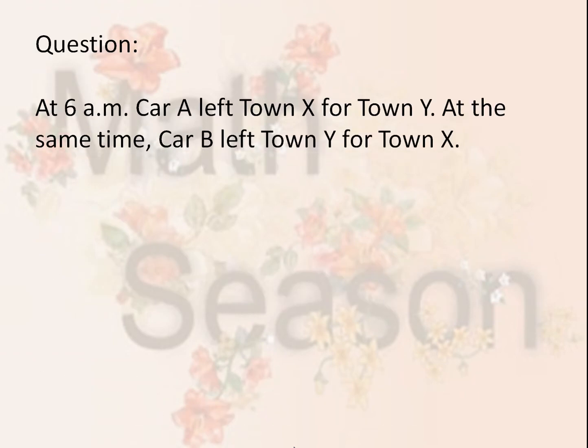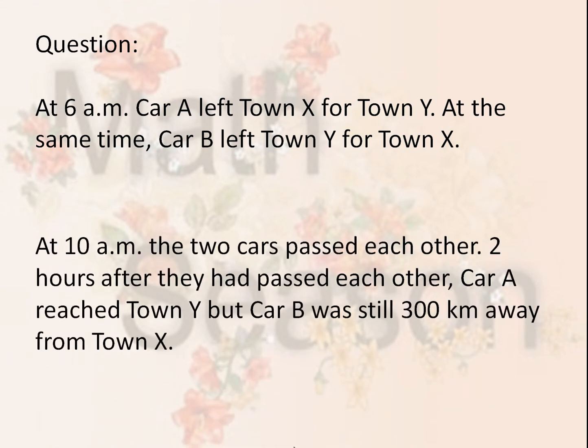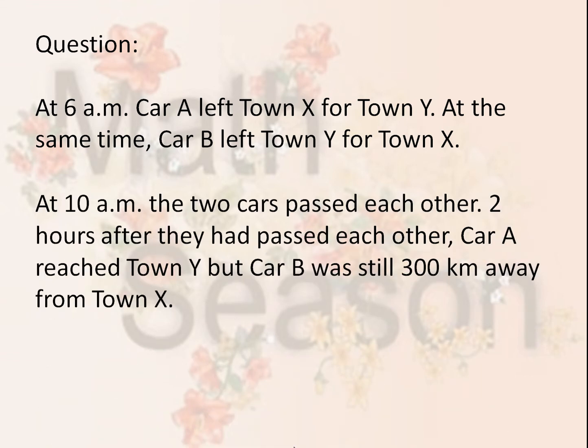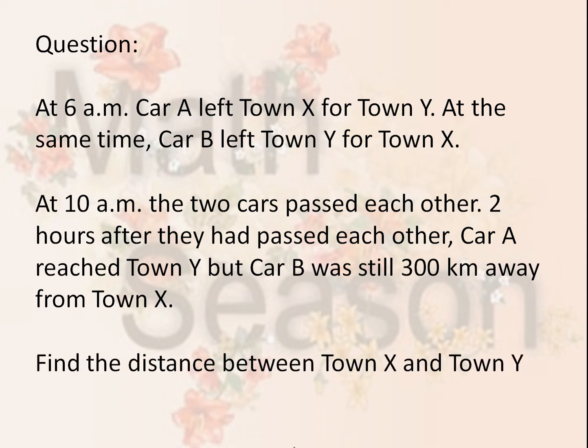At 6 a.m., car A left town X for town Y. At the same time, car B left town Y for town X. At 10 a.m., the two cars passed each other. Two hours after they had passed each other, car A reached town Y, but car B was still 300 kilometers away from town X. Find the distance between town X and town Y.